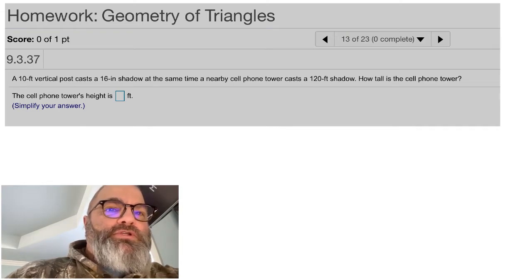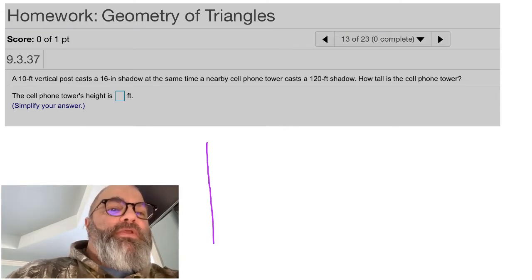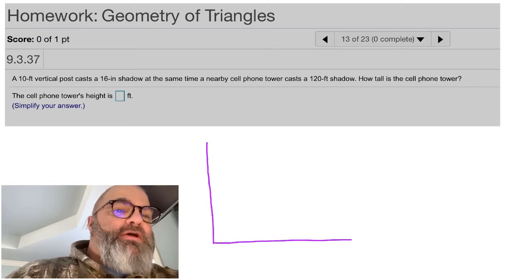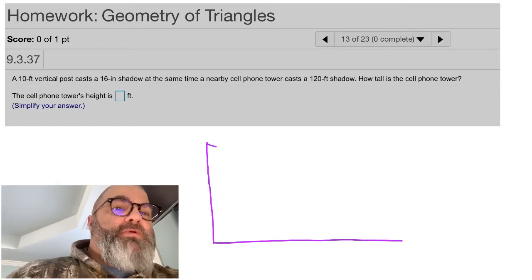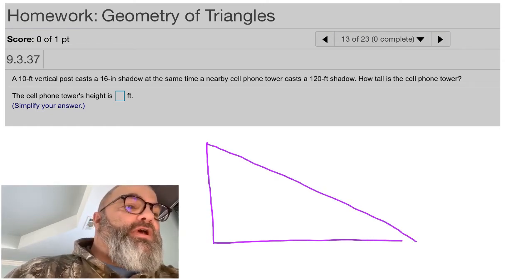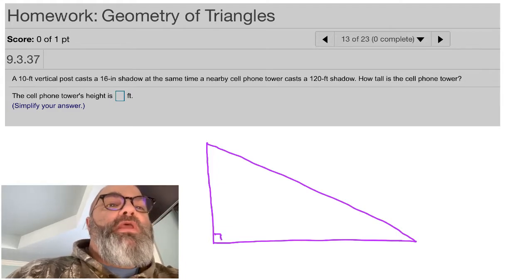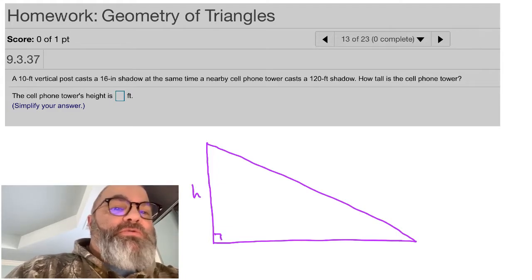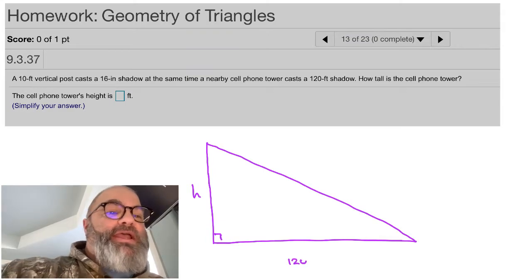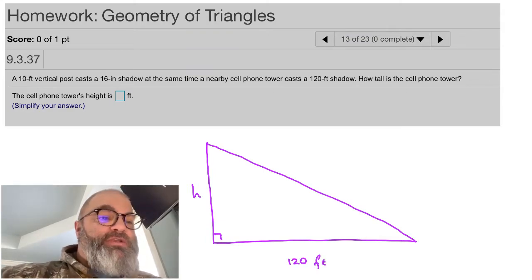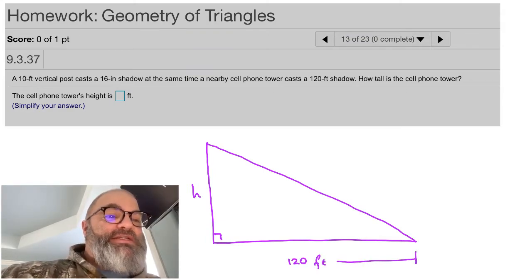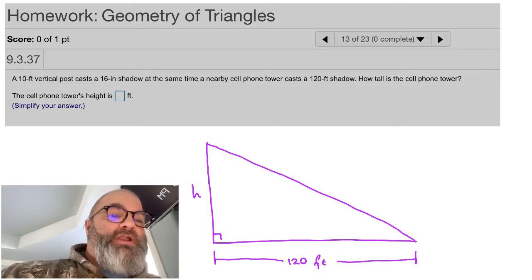Jumping into this, we've got a vertical tower, and we've got the ground running horizontally. So we draw our shadow line coming out there. Then we know that the height of that tower is what we want to know, so we'll label that as H. And we know that the shadow is casting a distance of 120 feet.